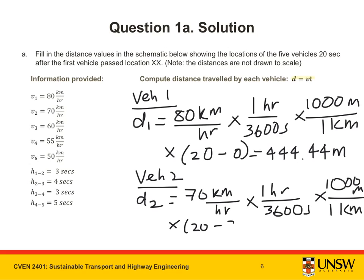which is 17 seconds, since the second vehicle passes XX three seconds later than the first vehicle. This gives a distance of 330.56 meters.